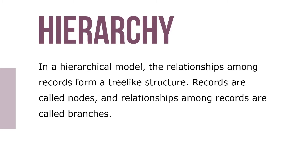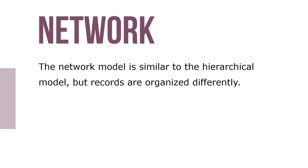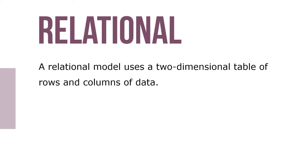In a hierarchical model, the relationships among records form a tree-like structure. Records are called nodes and relationships among records are called branches. The network model is similar to the hierarchical model but the records are organized differently. A relational model uses a two-dimensional table of rows and columns of data, much like an Excel spreadsheet.